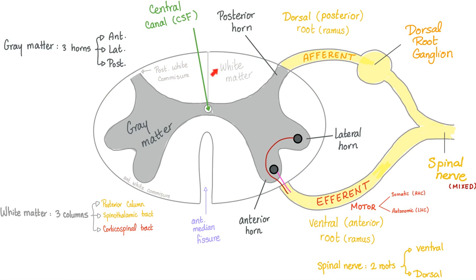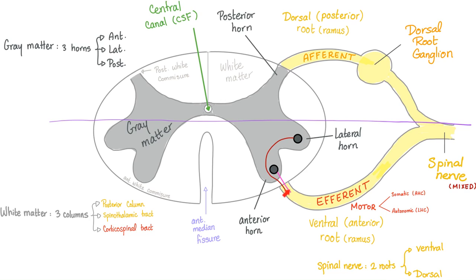Let's take a segment of the spinal cord. It has white matter and gray matter. The gray matter is on the inside and has an H shape — this is different from the brain, where gray matter is on the outside. Draw the line in the sand: anything in front is motor (efferent, ventral, anterior root or ramus); anything behind is sensory (dorsal, posterior, afferent root or ramus). The dorsal ramus and ventral ramus fuse together to form one spinal nerve, and you have 31 pairs of these in your body.